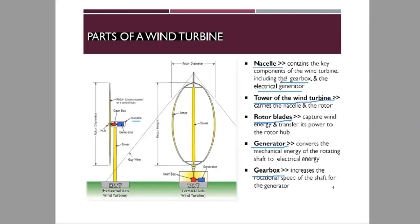The tower of the wind turbine carries the nacelle and the rotor. The rotor blades capture the energy of the wind and transfer its power to the rotor hub. These are the main functions of the tower and rotor blades respectively.